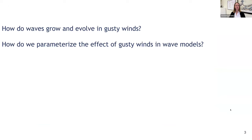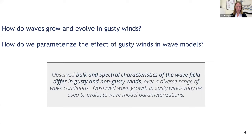Our questions: how do waves grow and evolve in gusty winds? And secondarily, how do we parameterize the effect of gusty winds and wave growth in wave models? Basically, from our analysis of this diverse data set, we have differences in both observed bulk and spectral characteristics of the wave field between when winds are gusty versus when they're not gusty. Hopefully we can use these observations to evaluate existing wave model parameterizations for gustiness.